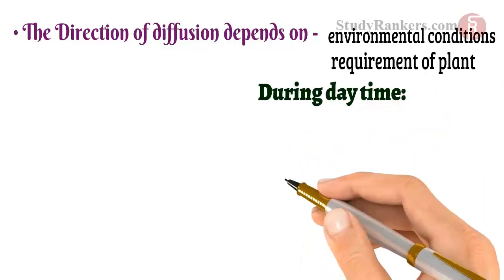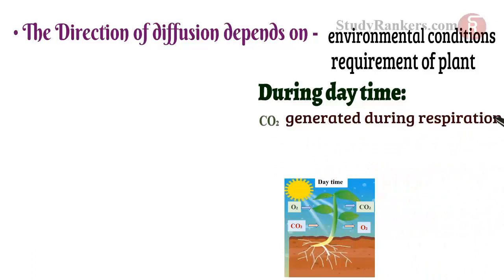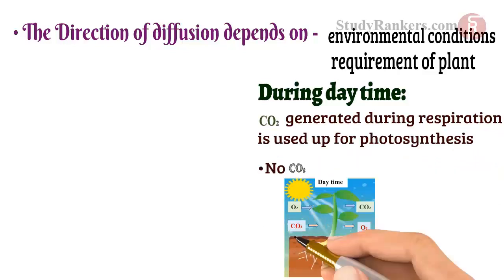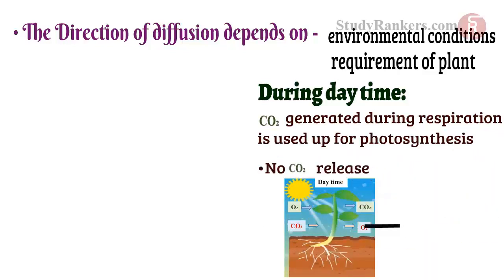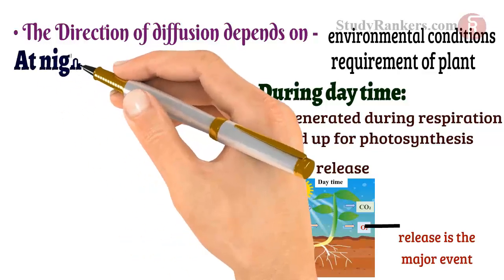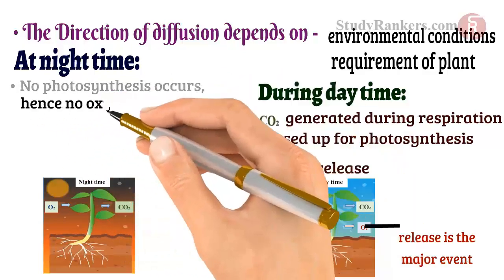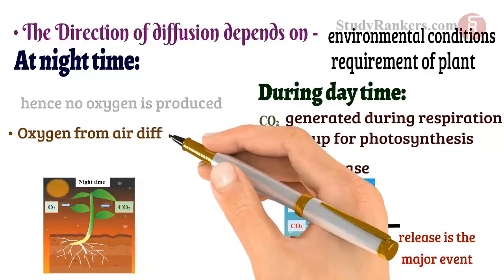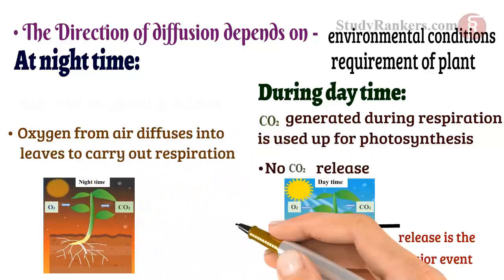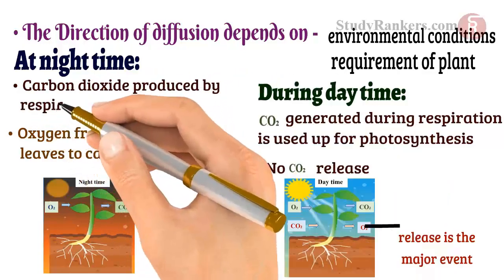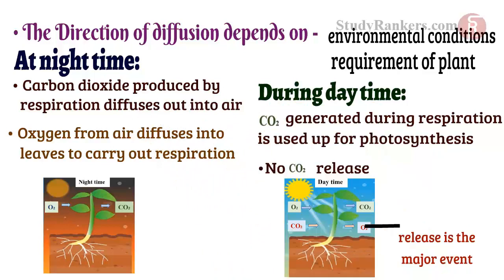During daytime, CO2 generated during respiration is used up for photosynthesis. Hence, there is no CO2 release. Instead, oxygen release is the major exchange activity at this time. At nighttime, when no photosynthesis occurs and hence no oxygen is produced, oxygen from air diffuses into leaves to carry out respiration, and carbon dioxide produced by respiration diffuses out into air. CO2 elimination is the major exchange activity going on.